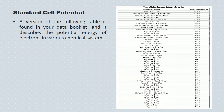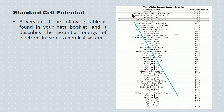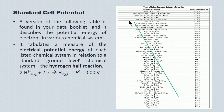A version of the following table is found in your data booklet, and it describes the potential energy of electrons in various chemical systems. The green arrow indicates the spontaneous flow of electrons. They flow from regions of high potential energy, which are the reactions you see down near the bottom of the page, to regions of lower potential energy, which you see up at the top right. It tabulates a measure of electrical potential energy for each of the listed chemical systems in relation to a ground state, namely the hydrogen half-reaction, which you see in the middle of the table with zero volts.